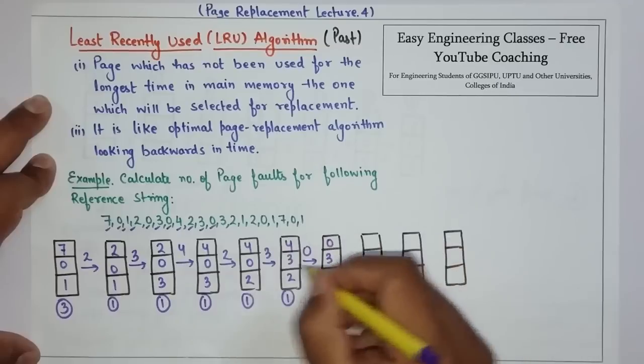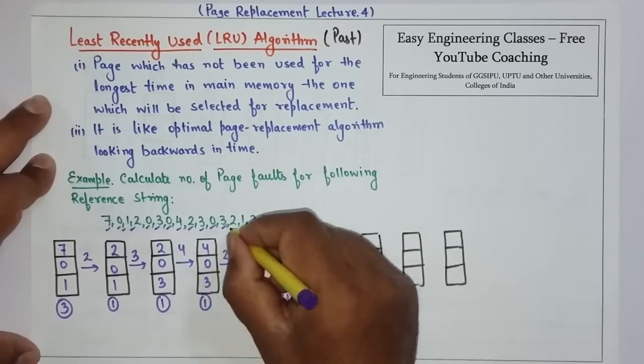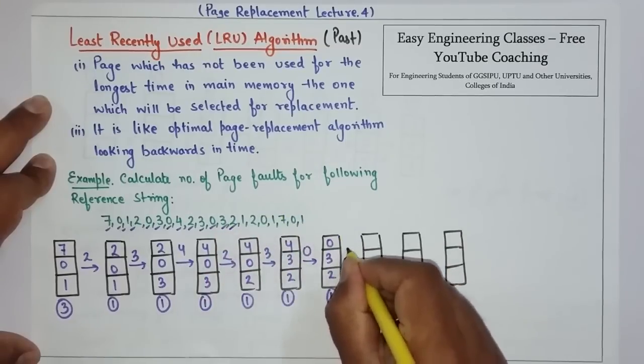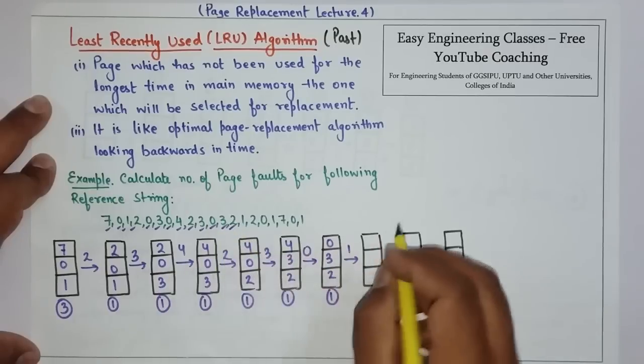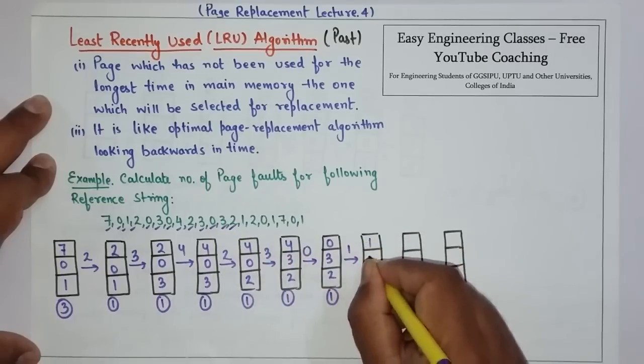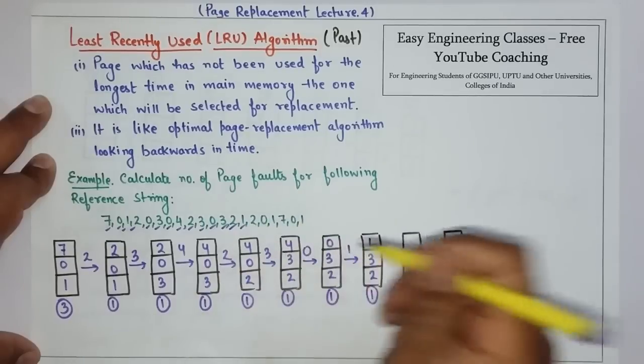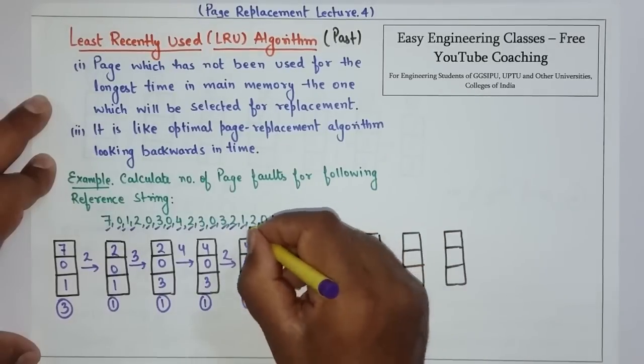Then comes 3. 3 is already there so no page fault. 2, 2 is already there so no page fault. Then comes 1. Now if we see 2 and 3 are recent, 0 is least recent. So 1, 3 and 2. Then comes 2. 2 is already there so no page fault.